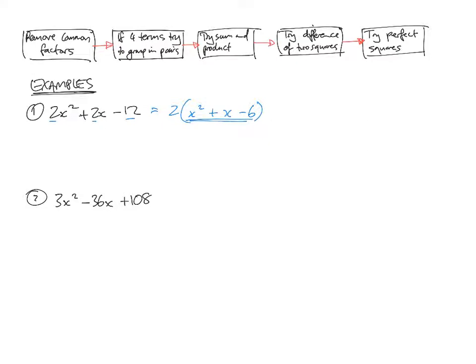So what are the factors of negative 6? 1 times by 6, 2 times by 3. Any one of those could be negative by itself. What is the number in front of x? 1.